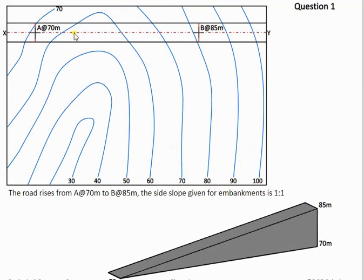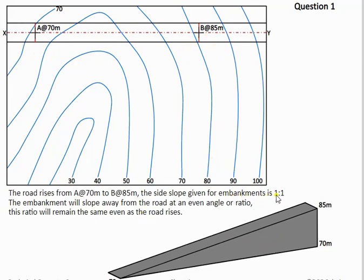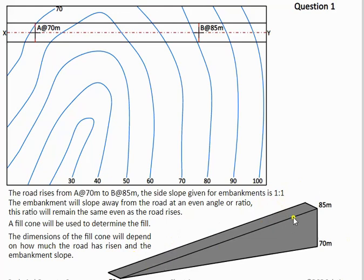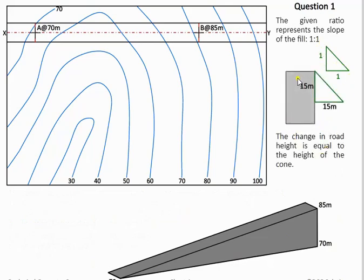In this question we have two points on the road: A at 70 meters and B at 85 meters, so the road has risen by 15 meters. Given the side slope of one and one, we calculate the cone for this question. The road is 70 at the low point and 85 at the top. With a side slope of one and one and a height change of 15 meters, we get 15 by 15, giving us the size for our cone.